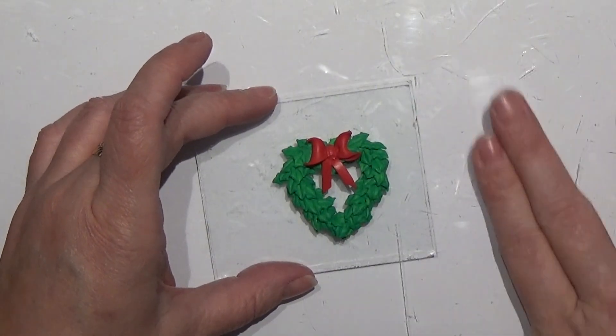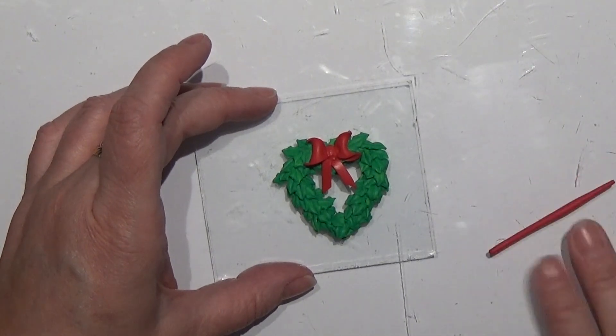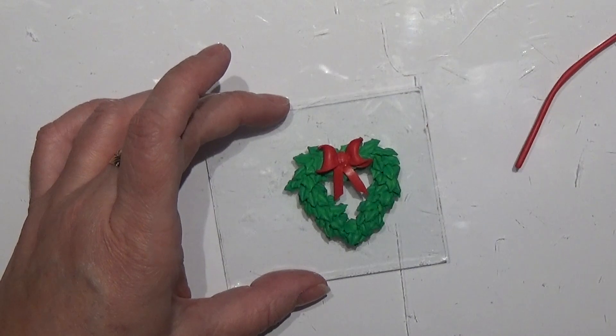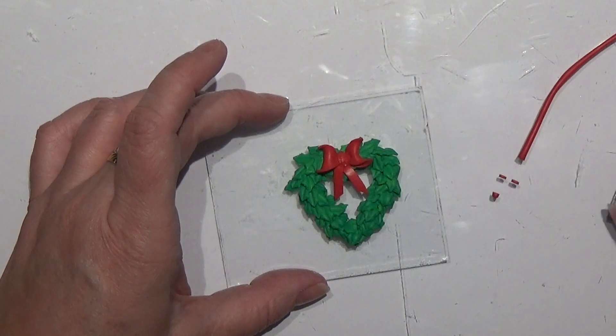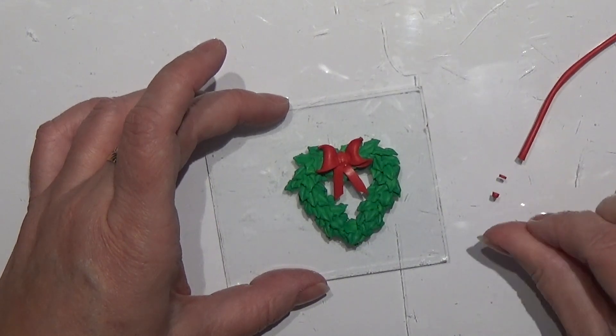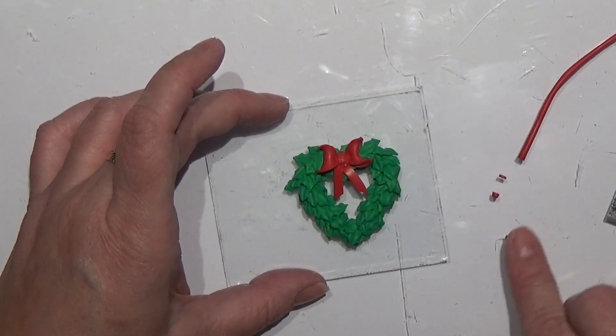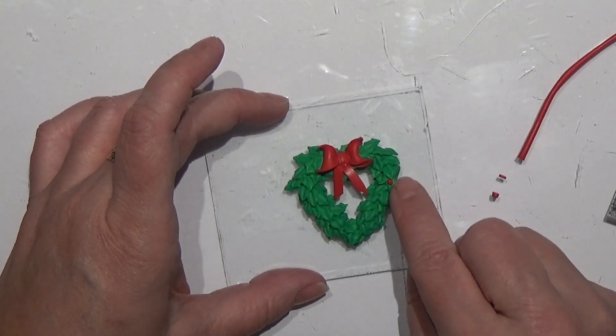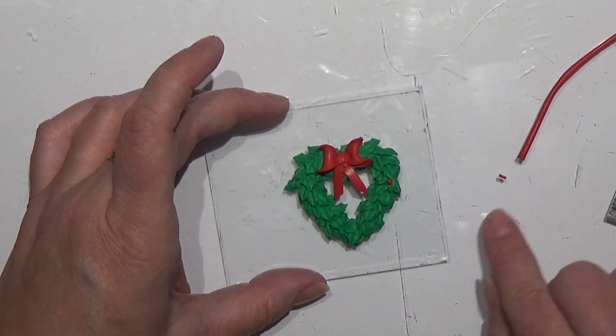You can decorate this as you want to, just like I said. I'm going to take some of my red colored clay here and cut out a few balls here and there, roll a few balls and place them on the wreath as the berries.